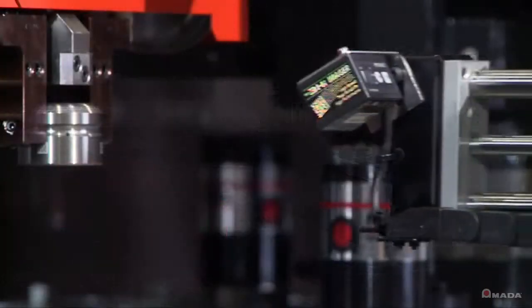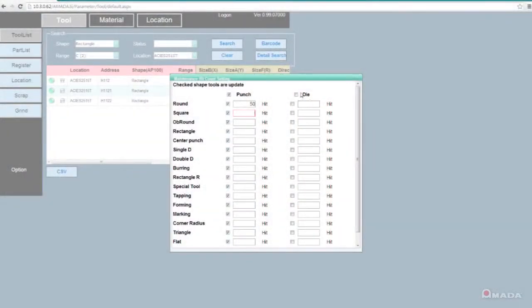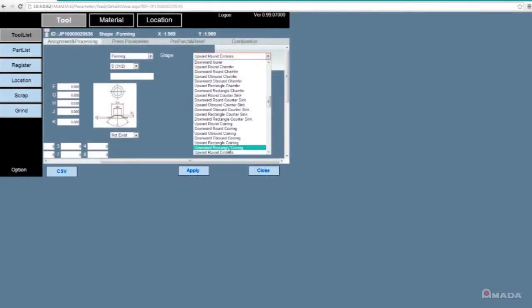The ID allows for the tracking of each tool's hit count, how much it's been sharpened, and remaining life. All of this information is stored electronically and can be viewed on a web-based server.